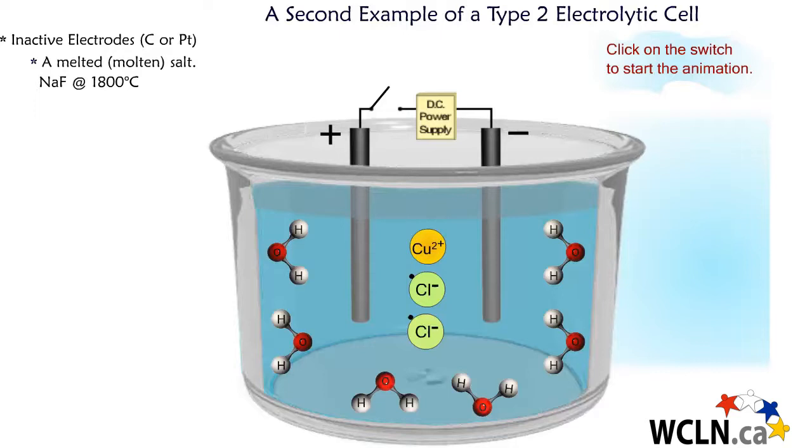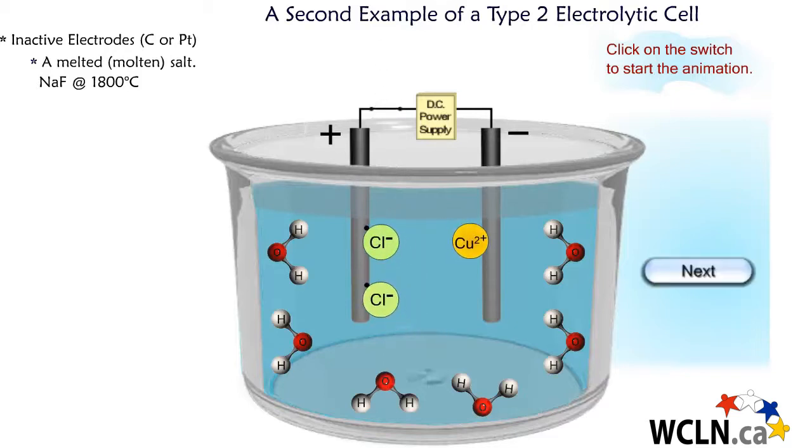In this second example of the Type 2 electrolytic cell, we dissolve copper 2 chloride in water. When the switch is closed, the chloride ions, being negative, are attracted to the positive electrode, which is the anode, and the positive copper ion is attracted to the negative electrode, which is the cathode.